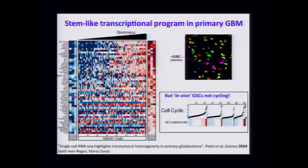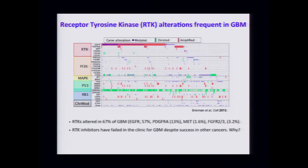Now I'll talk about therapeutics before coming back to that population. RTK inhibitors have been a dramatic advance in cancer research — Ryan Drucker, Charles Sawyers and others showed that Gleevec, this miraculous inhibitor of BCR-ABL, practically cures CML by ablating the whole tumor population. This led to a lot of excitement and RTK inhibitors are now being used in many settings.